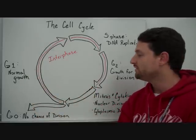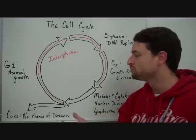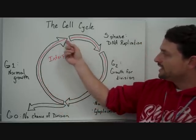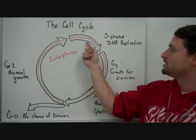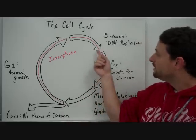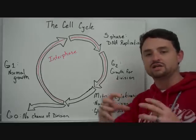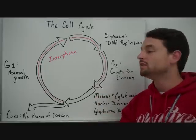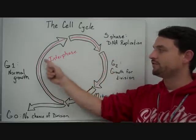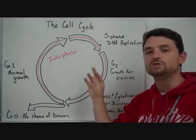G1 is a normal growth phase of the cell cycle — it's just normally going about what it does, growing, producing enzymes and proteins. Then if it's going to divide, it will go into an S phase, where we have DNA replication — the DNA will make a copy of itself. Then it will go into a G2 growth phase, which is growth for division — the cell is getting bigger and replicating organelles needed in the new cells. G1, S, and G2 are collectively called interphase.